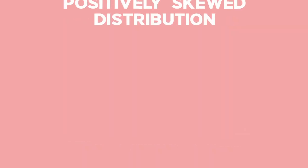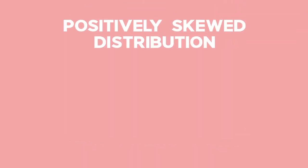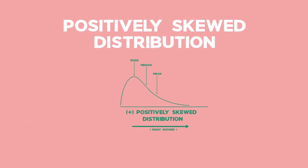In a positively skewed distribution, the mean and median are pulled toward the left, creating a longer tail on the right of the distribution. The mean would be greater than the median, and the median greater than the mode.